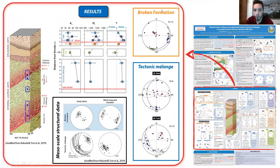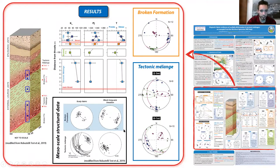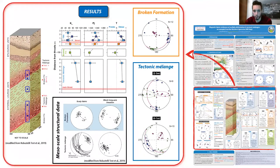In the broken formation, the magnetic fabric is characterized by a magnetic lineation consistent with the block long-axis lineation, recording the layer-parallel extension that occurred at the wedge front.